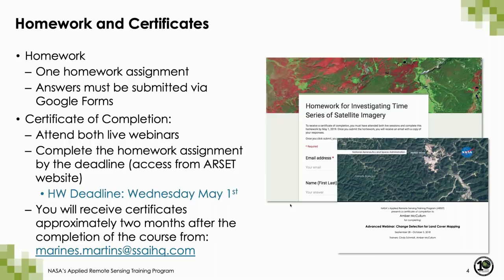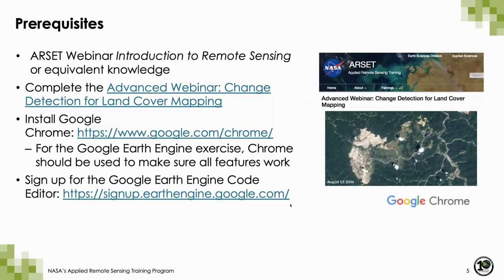It does take a little bit of time to get all of the certificates processed and out to everyone, so please allow about two months before you will receive your certificate. Here are the course prerequisites: you should take our e-learning course introduction to remote sensing, or have some equivalent knowledge. You should also take our previous webinar on change detection for land cover mapping.